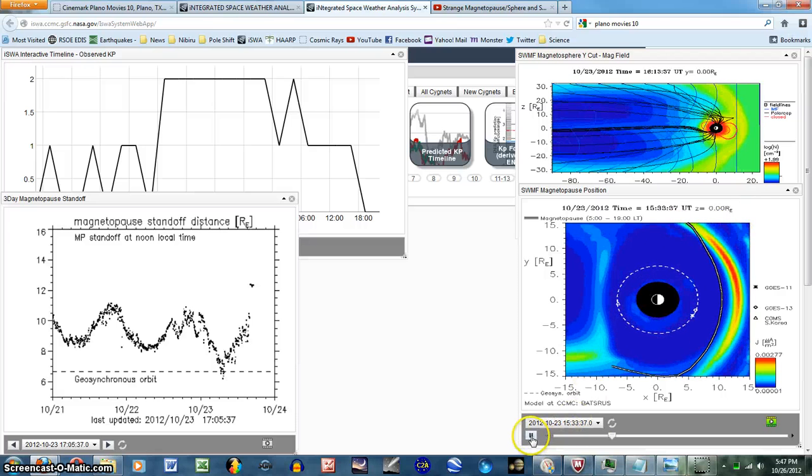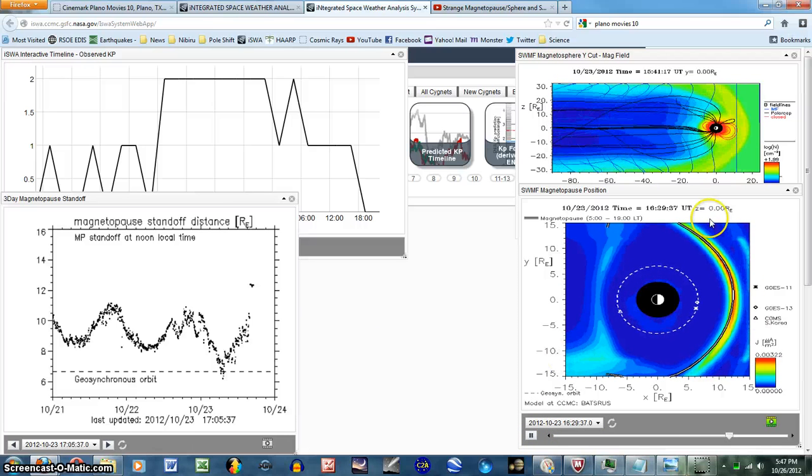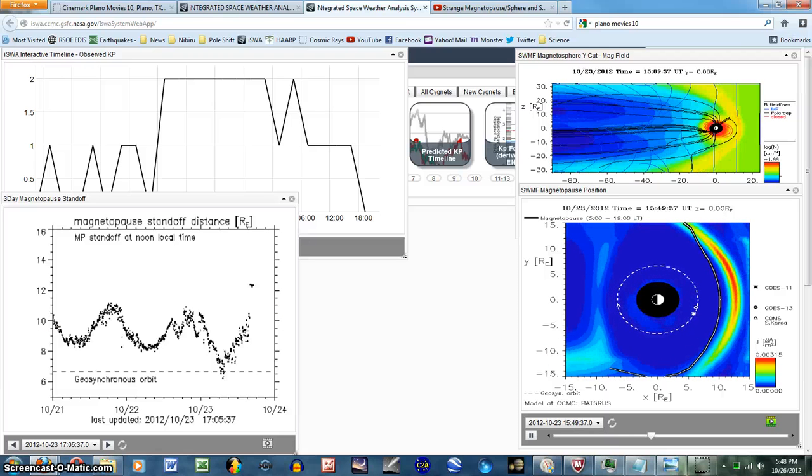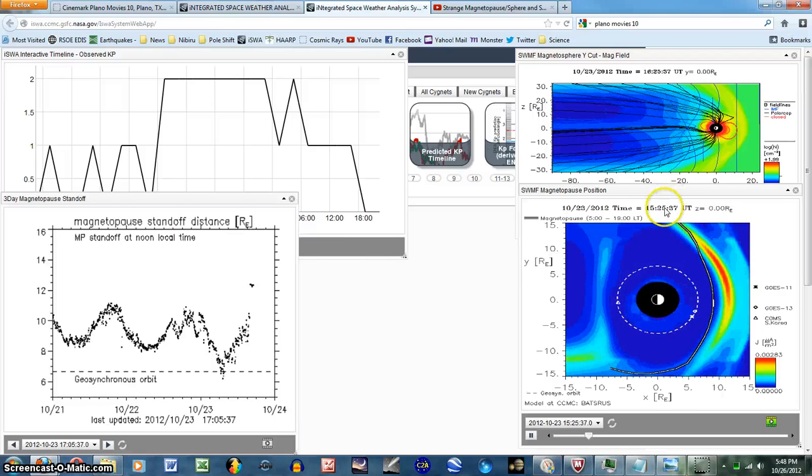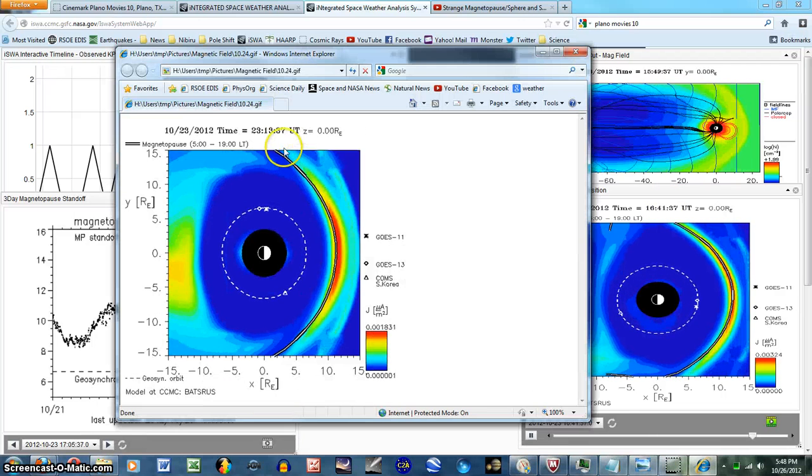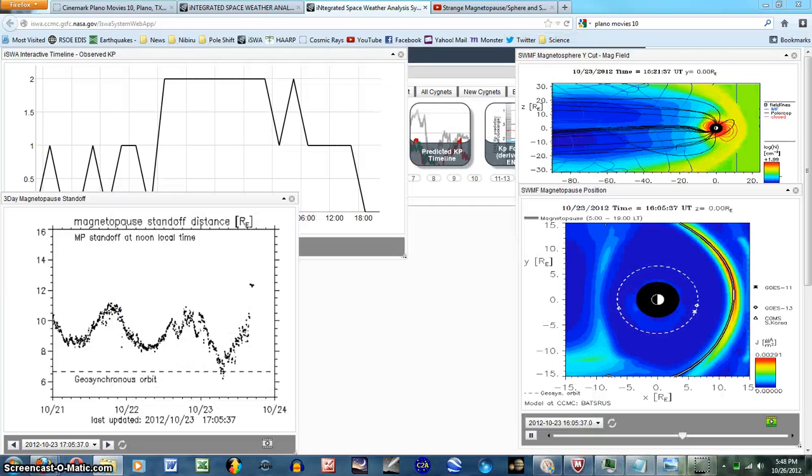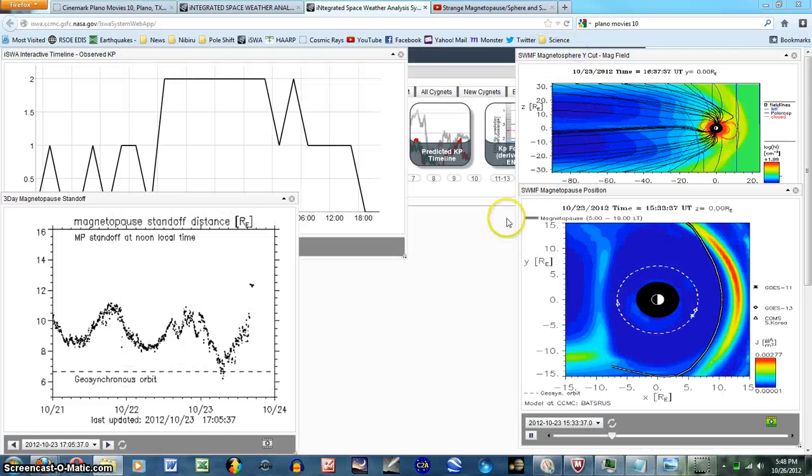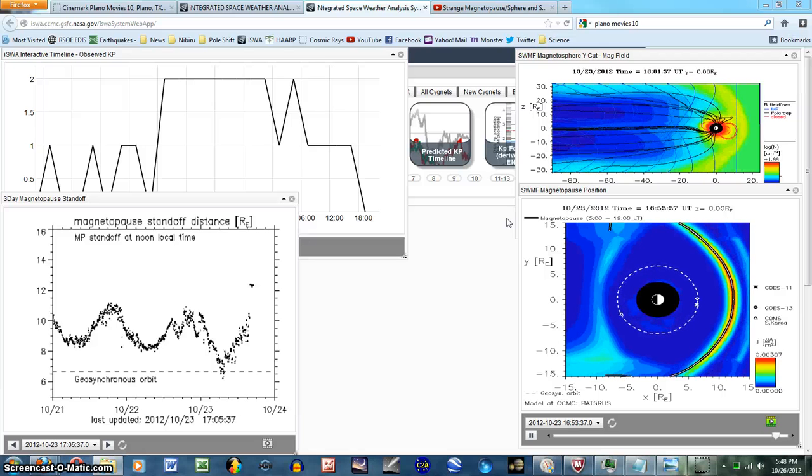Since the 23rd it's been tracking the magnetopause like it did before. Did something happen in space or in the environment that caused the line to go back to normal? On the 24th it's been tracking like it was before, then on the 25th it's been tracking again. I was wondering, is this just a normal event or did NASA do something?